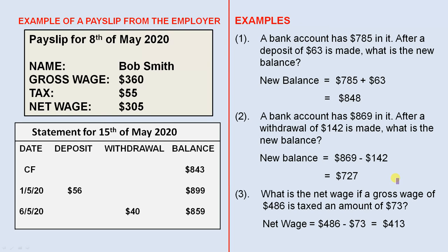Number 3: What is the net wage if a gross wage of $486 is taxed an amount of $73? The net wage will be the gross wage minus the tax, which is $413. And that's the amount you take home.